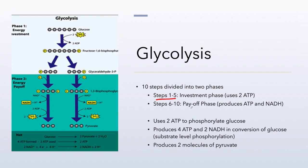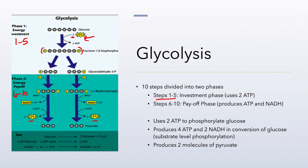In steps six through ten, the payoff phase, the glycolytic pathway branches and splits. Each of the resulting molecules is a G3P molecule, and each will be oxidized enough to provide two ATP, for a total of four. In steps one through five we input two ATP because we put a phosphate group on either side of the glucose molecule. Finally at step five, the molecule is cut in half, giving two G3P — glyceraldehyde-3-phosphate — molecules.